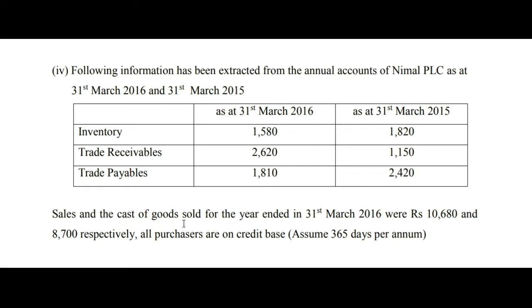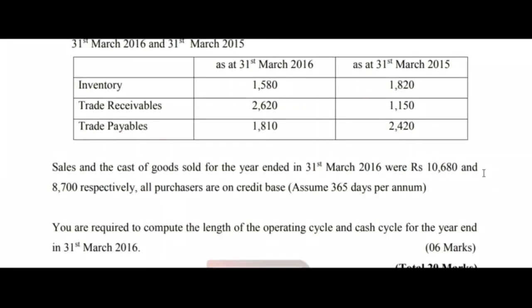Sales and the cost of goods sold for the year ended 31st March 2016 were rupees 10,680 and rupees 8,700 respectively. All purchases are on a credit basis. Assume 365 days per annum. You are required to compute the length of the operating cycle and cash cycle for the year ended 31st March 2016.